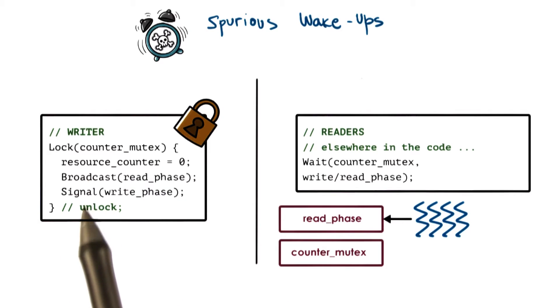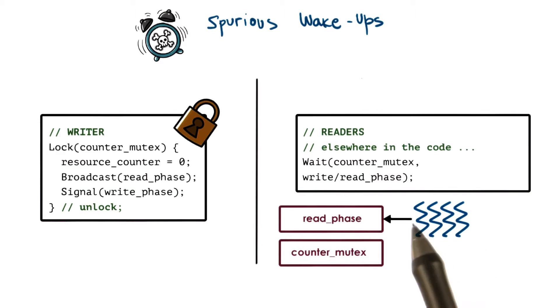So what can happen when this writer issues the broadcast operation, this broadcast can start removing threads from the wait queue that's associated with the read phase condition variable. And that